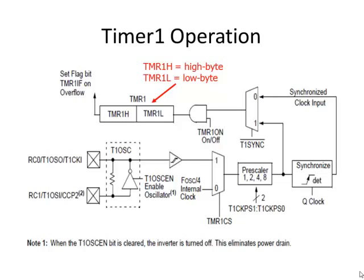Let's start with the heart of the timer itself: the timer register. This is a 16-bit register. The PIC microcontroller is an 8-bit CPU, so we usually only deal with 8-bit registers — we can think of timer 1 (TMR1) as two 8-bit registers put back-to-back: TMR1H is the high byte and TMR1L is the low byte. When I say TMR1, I'm referring to the entire 16 bits; TMR1H is the high byte, TMR1L is the low byte.